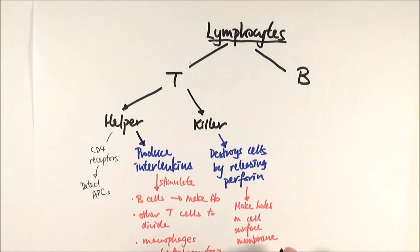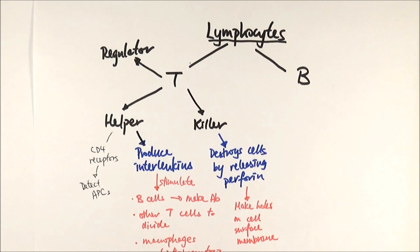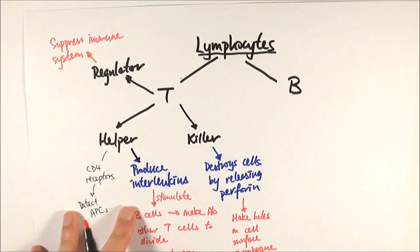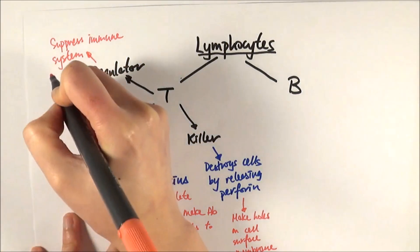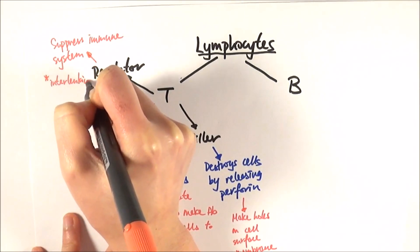We also have T regulator cells. The T regulator cell is not directly involved in the immediate immune response, but it is very important afterwards. It controls all of the T cells to stop them from triggering an autoimmune disease — specifically, it stops them from recognizing self-antigens as foreign. Interleukins are involved in this process, though the exact interactions are not required knowledge.